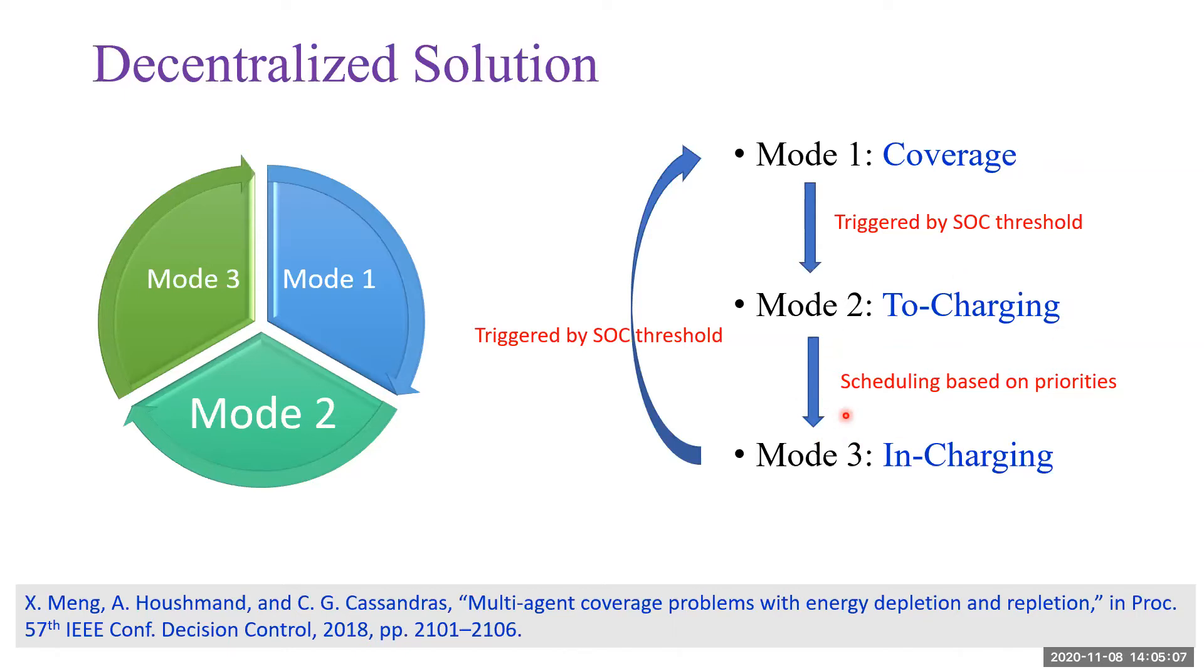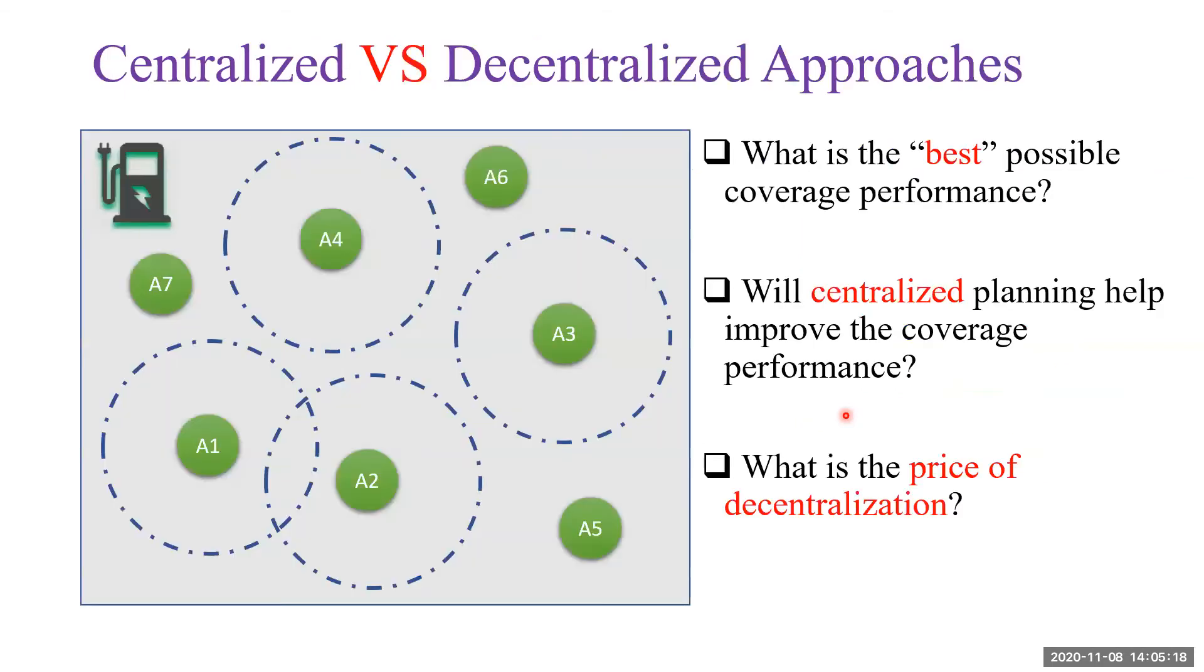But when more agents are competing for the charging station, the coverage performance is degraded. This raises the question of what will be the best performance. When all information is available, will the centralized scheduling or planning help improve the current performance? What is the price of decentralization?